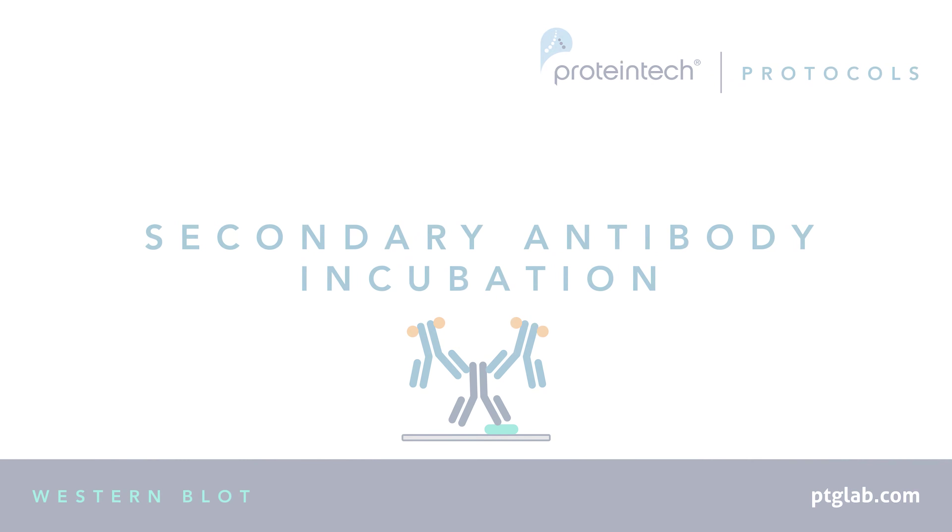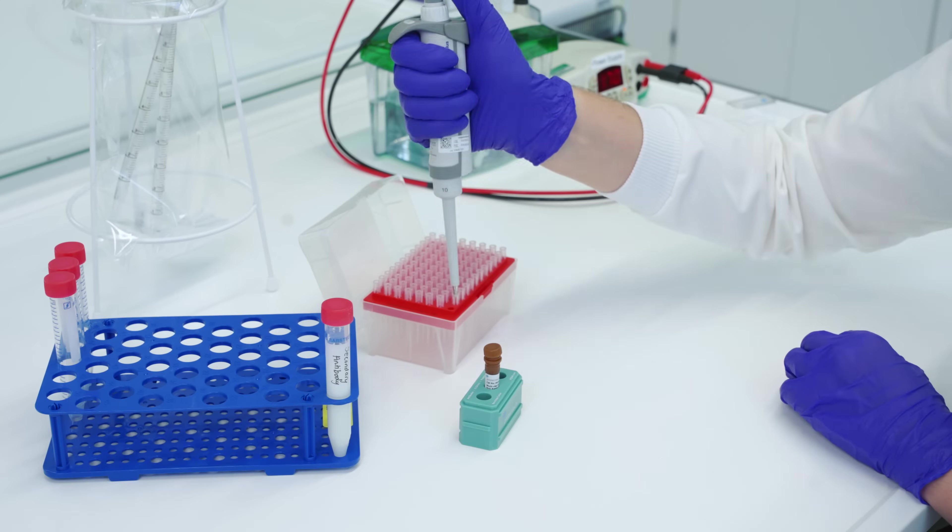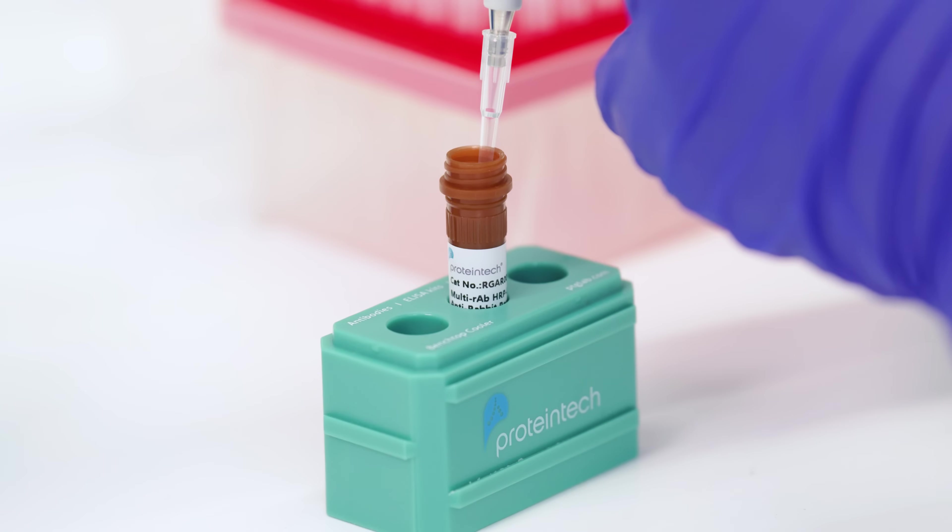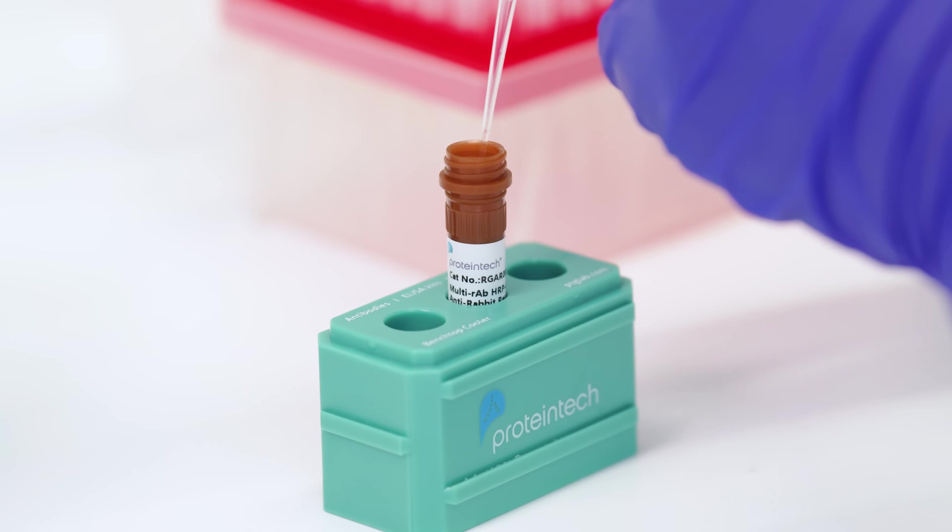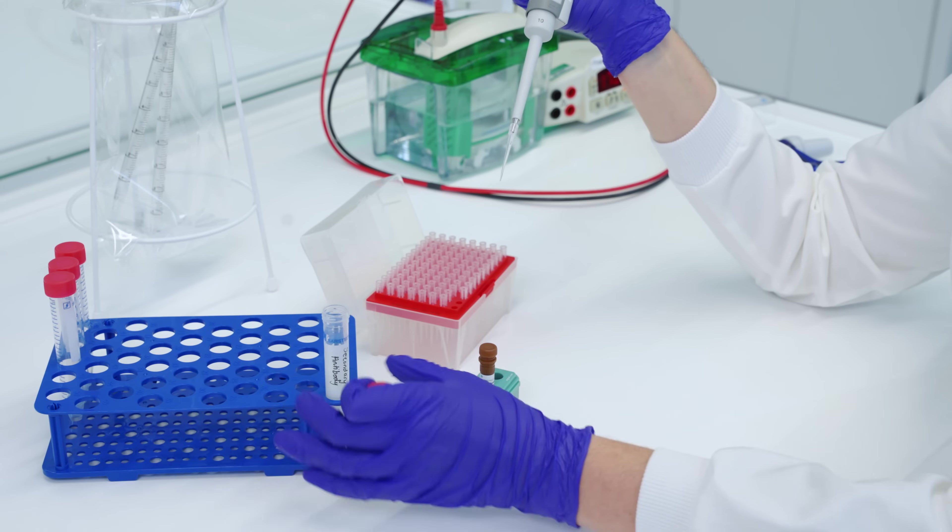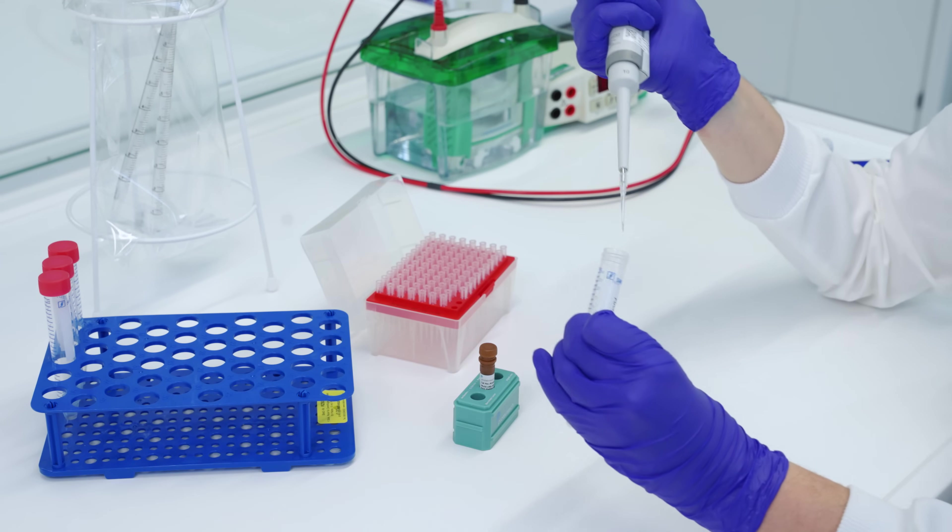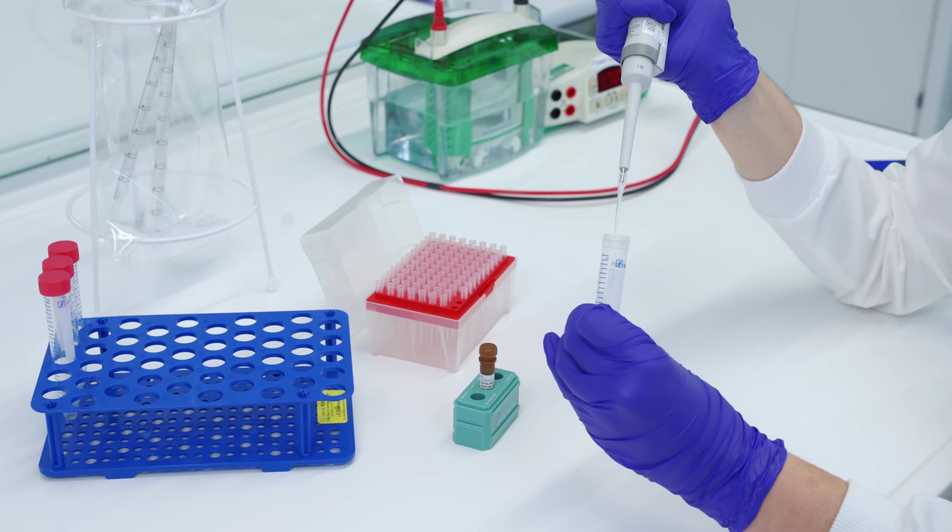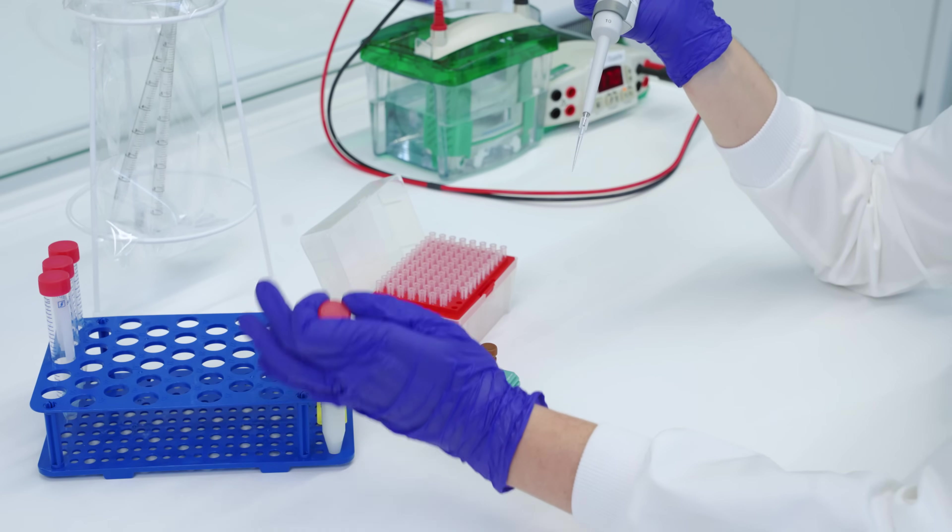During the wash step, prepare your secondary antibody dilution in blocking buffer. The dilution factor of your secondary antibody will be outlined in its datasheet. Secondary antibodies are conjugated to either fluorescent dyes or enzymes. They bind with high specificity to the primary antibody, allowing the detection of your protein of interest.